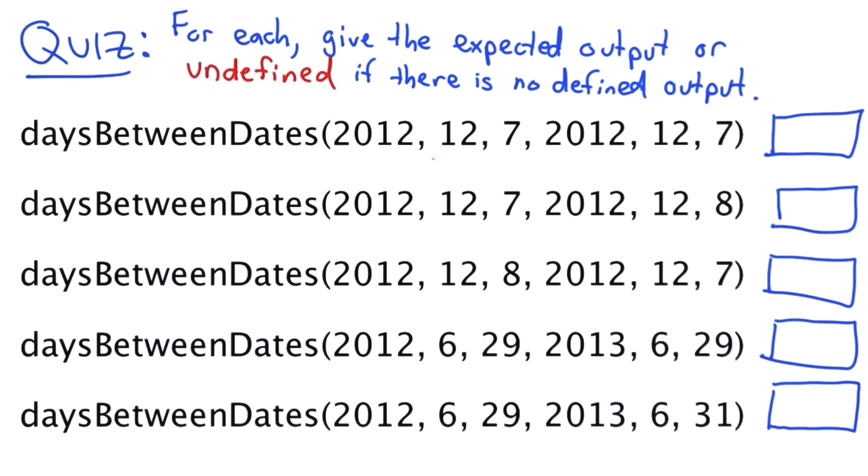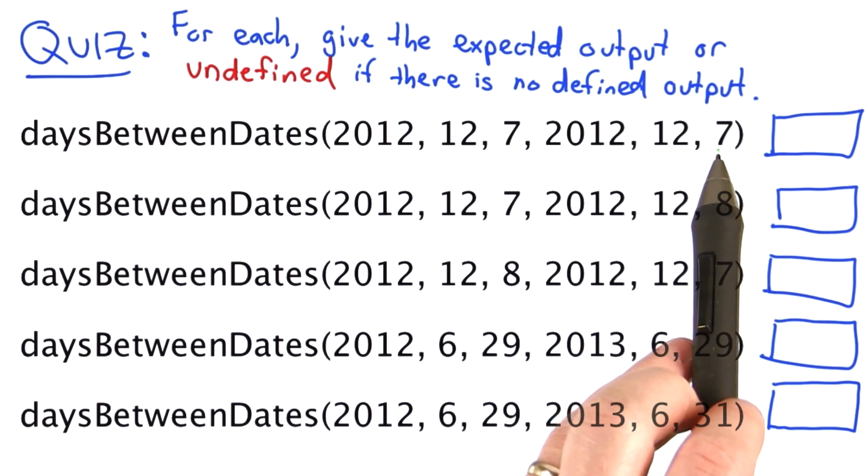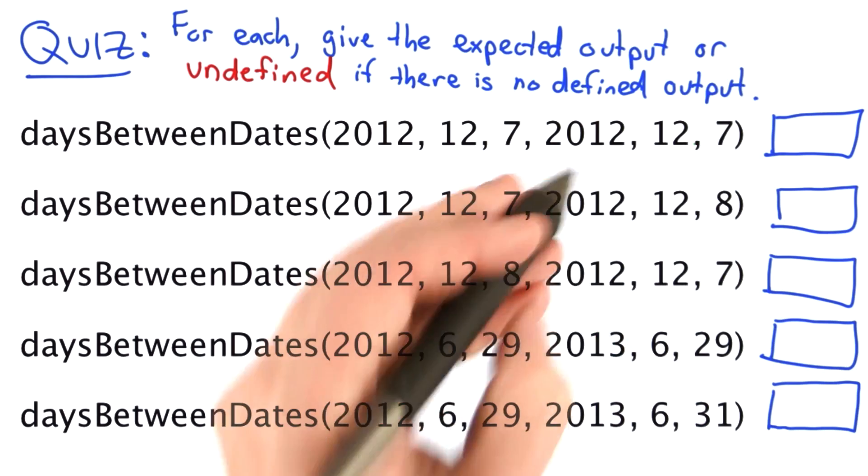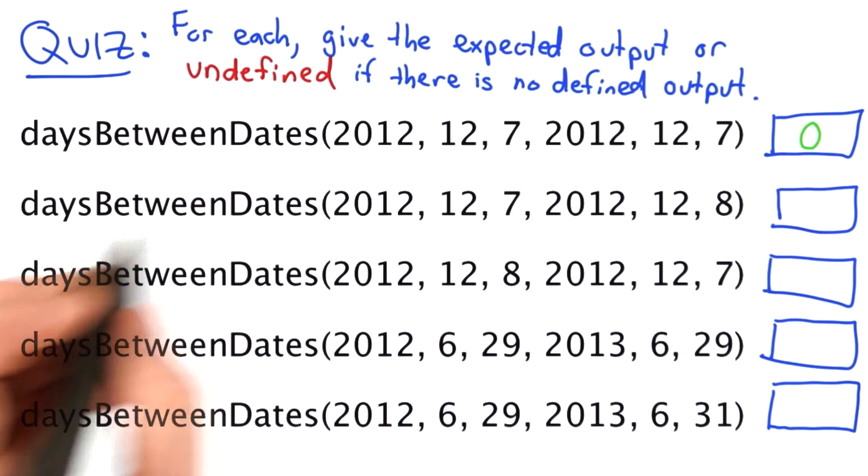The answers are: for the first one, the dates are the same. We said that was okay. The requirement is that the second date cannot be before the first date. It's fine if they're the same, and then the answer should be 0. There are no dates between those two.